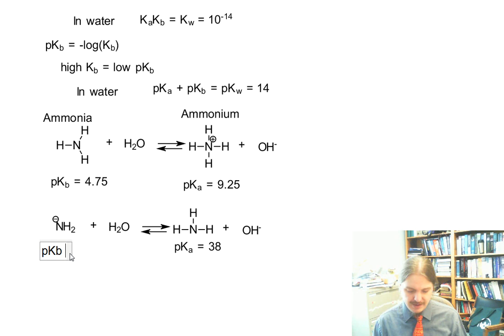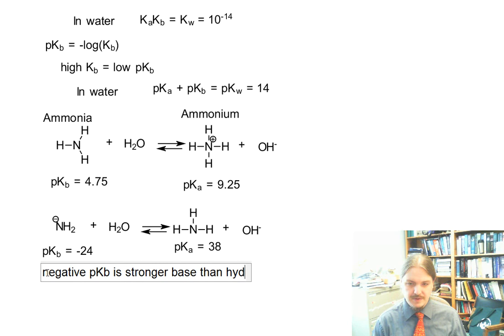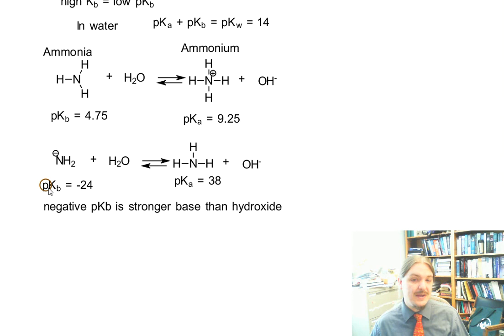So you can do the math. 14 minus 38 means that the PKB of amide is equal to negative 24. And so just like in the world of acids, in terms of water, things that have a negative PKB are stronger bases than hydroxide. And so just like with cases of acids, things that have a negative PKA are going to completely react with water. So I shouldn't even show this equilibrium. Completely react with water, and so the base that's actually present in the system is hydroxide and not amide.